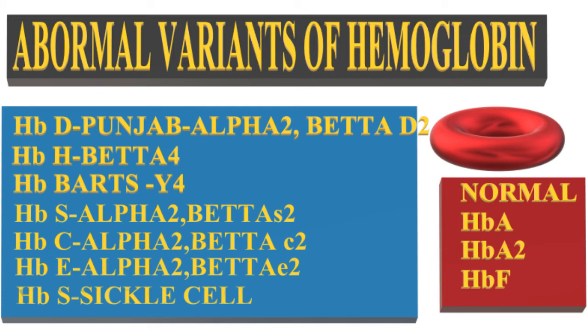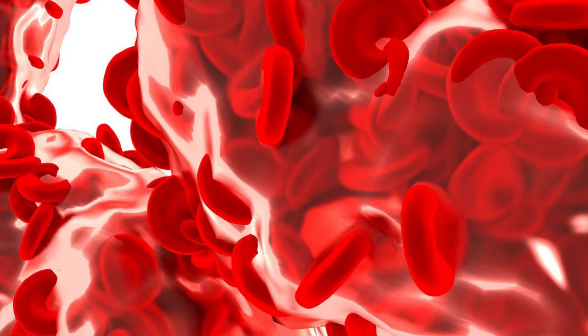Abnormal hemoglobin variants include Hemoglobin S, Hemoglobin E, Hemoglobin C, and Hemoglobin D. The amino acid substitution in these variants alters the net charge, causing inaccuracy in charge-based methods of HbA1c estimation. Any mutation involving the particular epitope in a variant hemoglobin will interfere with immunoassay-based HbA1c methods.